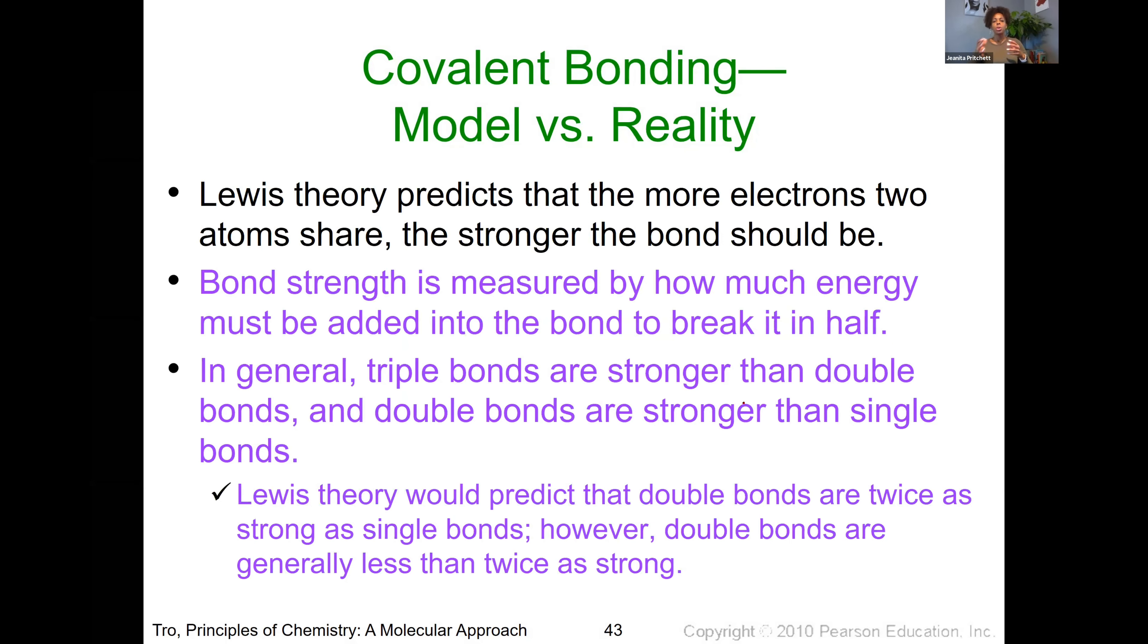And then one of the things that are two other things that we're going to talk about regarding the model and what we see in reality. So Lewis theory also predicts that the more electrons that are shared between different atoms, the stronger that they will be. And that indeed is true. So we do see that triple bonds, which has six electrons, are much stronger than double bonds, which are much stronger than single bonds. Now, the theory would actually predict that, you know, a double bond should take twice as much energy to break or a triple bond should take three times as much energy to break compared to a single bond. However, we do see that that is not the case. There is a considerable amount more that's needed to break or make those bonds, but it's not exactly double or triple.